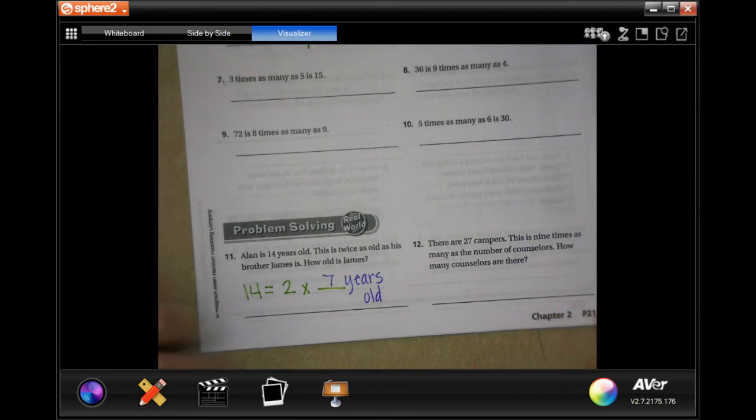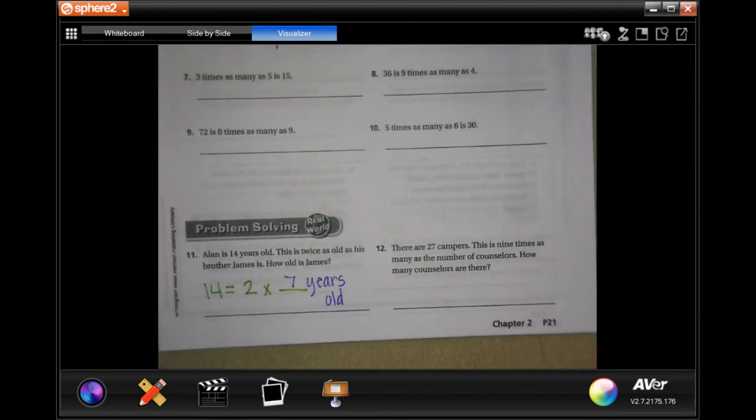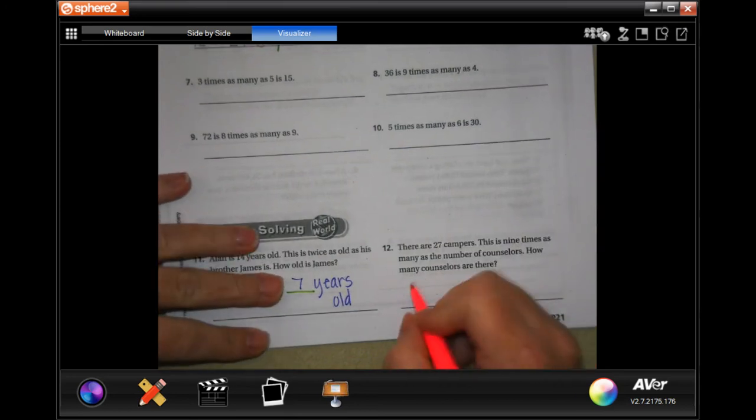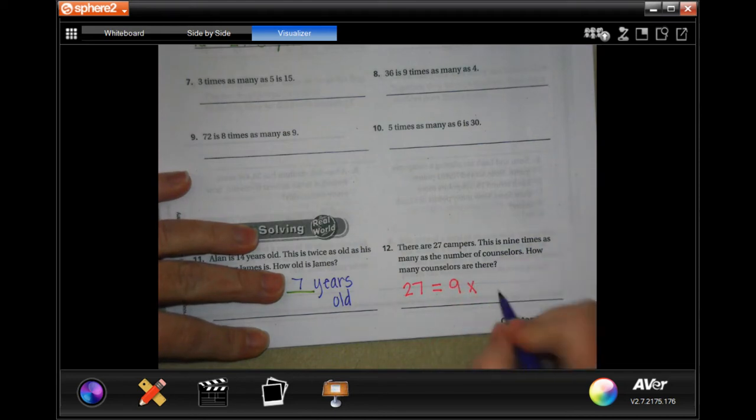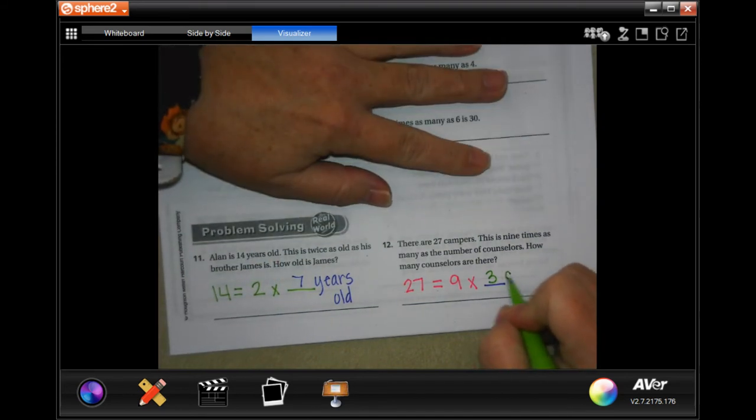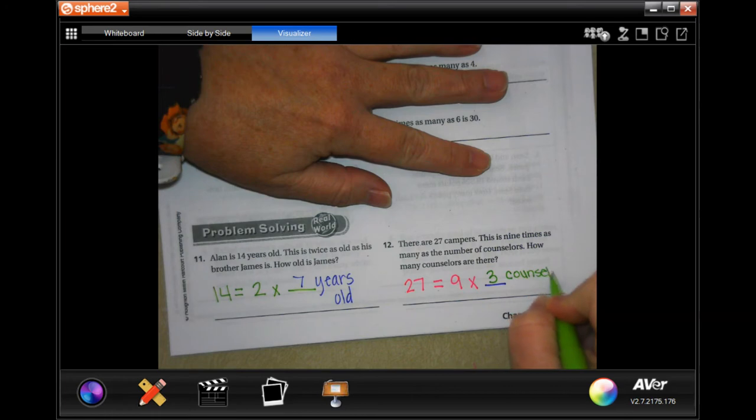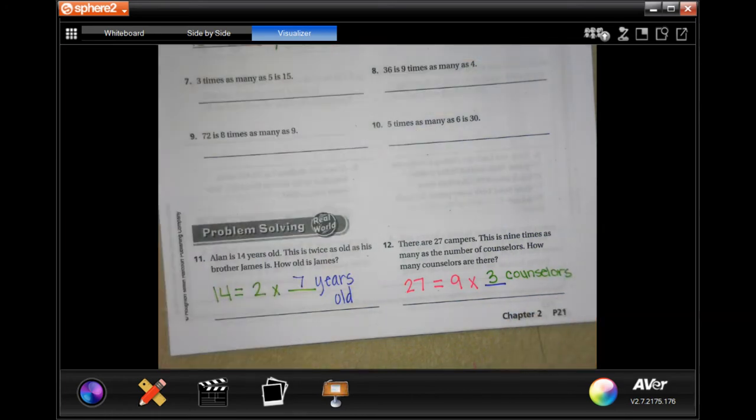Number 12 says that there are 27 campers. This is nine times as many as the number of counselors. How many counselors are there? So 27 is nine times as many counselors. I know that nine times three is 27. So we will have three counselors. Not bad.